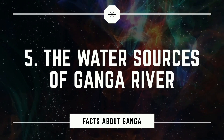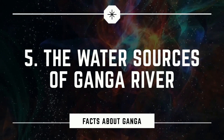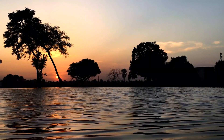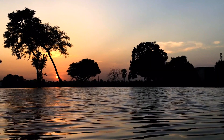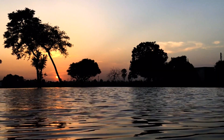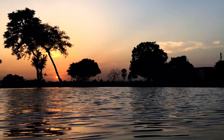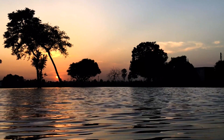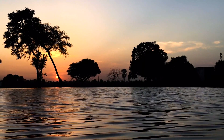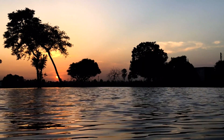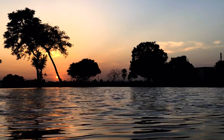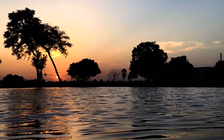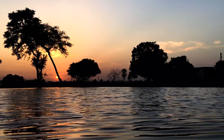The Ganga river system is fed from a variety of sources, including the Gangotri glacier in the Himalayas, many tributaries, monsoon rains in the months of July to September, and cyclones.